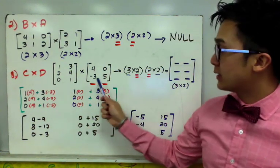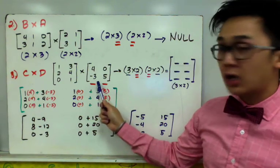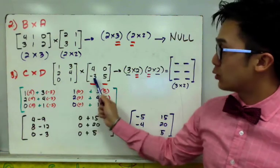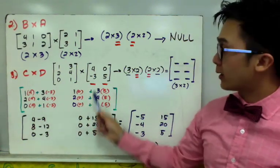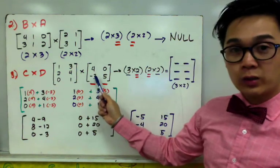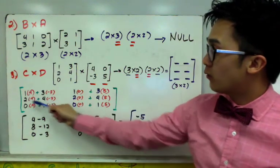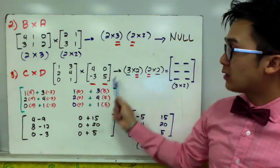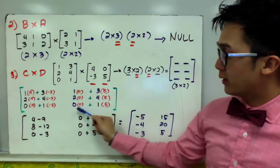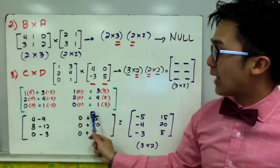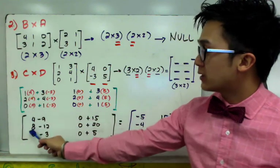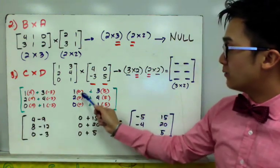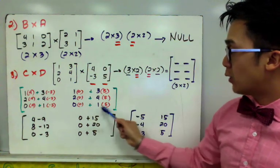Matrix C is the first matrix and matrix D is the second. The first step is to count the number of columns of matrix D, which gives us two columns. So we copy the first matrix twice. The first column of D is 4 and negative 3, so we multiply it horizontally: 4 and negative 3 for each row. The second column is 0 and 5, so we multiply it horizontally: 0 and 5 for each row. Simplifying the entries: first column gives 4 minus 9, 8, negative 12, and 0 minus 3. Second column gives 0 plus 15, 0 plus 20, and 0 plus 5.